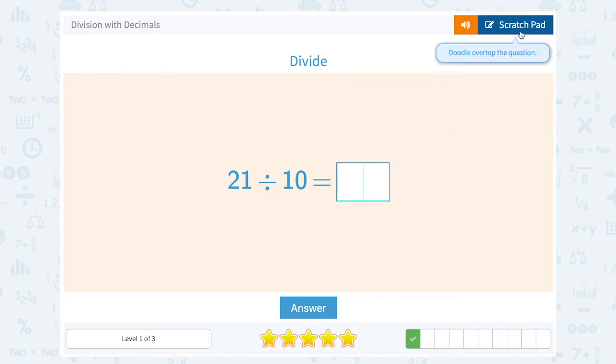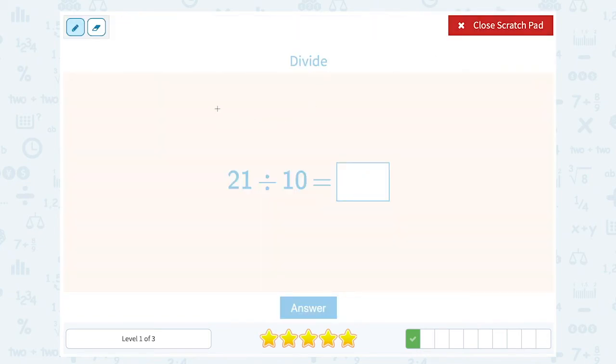21 divided by 10. Well, since we're dividing by 10, we can follow that exact same pattern. I can think of this as 21.0. So to make it one place value smaller, I would move my decimal, and it becomes 2.10 or just 2.1. The zeros at the end, I can leave off.